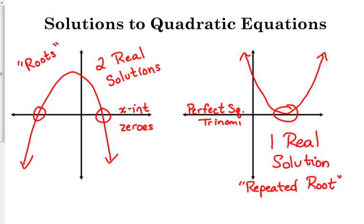Because if you recall, when those factor, we end up with something like this, x-4 squared. So technically, there are two solutions. We have two factors, but they're the same factor, so that's why it's a repeated root. And that will just touch the x-axis.